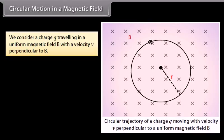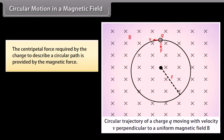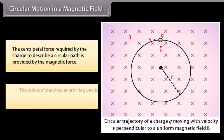Circular Motion in a Magnetic Field. We consider a charge Q travelling in a uniform magnetic field B with a velocity V perpendicular to B. As the magnetic force always acts perpendicular to V, the velocity of the charge changes only in direction but the speed V remains constant inside the field. The force, having a constant magnitude and always directed at right angles to V, gives rise to uniform circular motion. The centripetal force is provided by the magnetic force, and the radius of the circular orbit is given by MV / (QB).